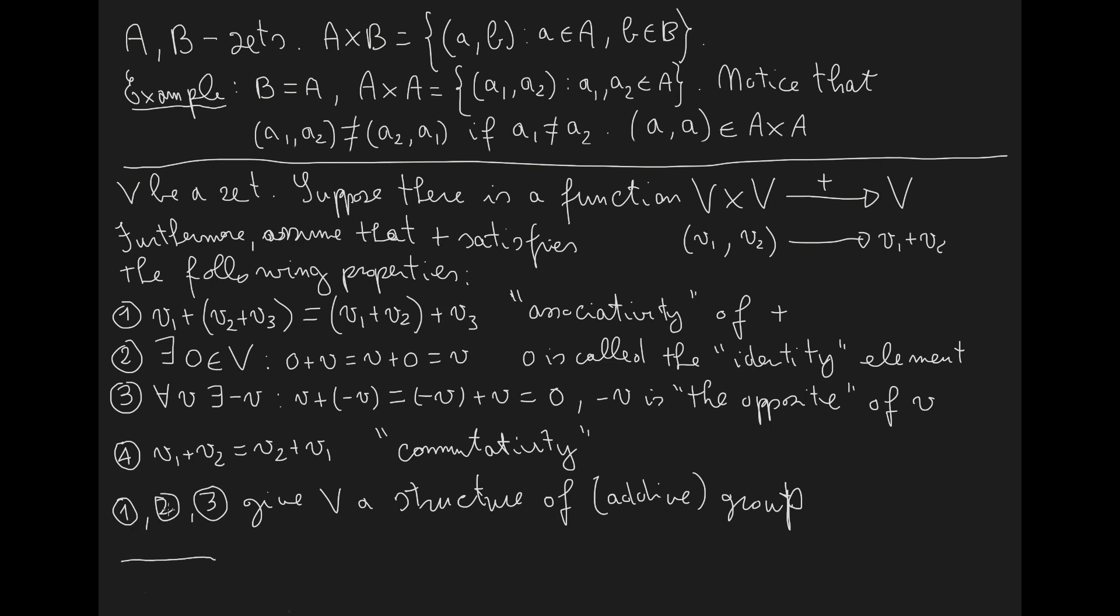Now if we also add property number four, besides one, two, and three, then this gives V the structure of a commutative or abelian group. Commutative and abelian are synonymous.